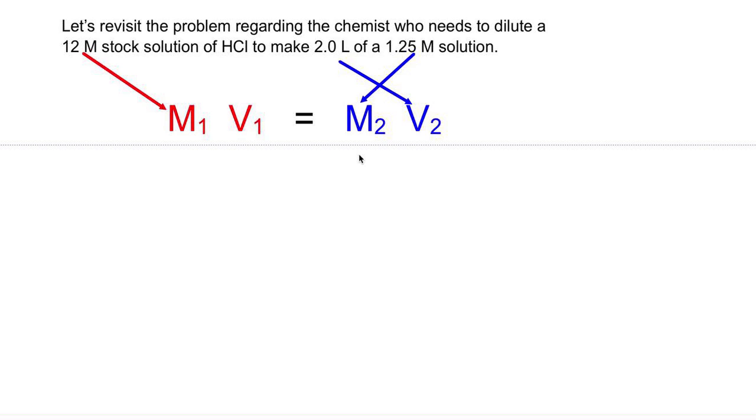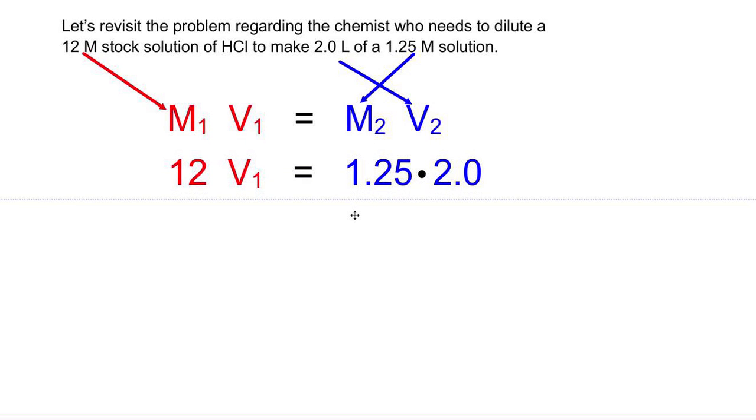So we read our problem and start pulling out the information. So plug in your old molarity and your new molarity which is 1.25 and then we don't know the volume of the strong stuff that we're going to dilute. We're probably not going to dilute the entire container but we're going to pull out a little bit of that 12 molar solution and add water to it to dilute it. We just don't know how much of it. So that's what we're solving for here.